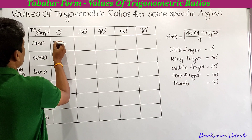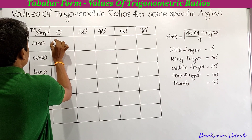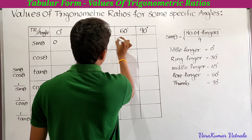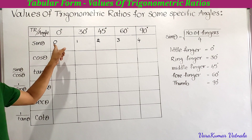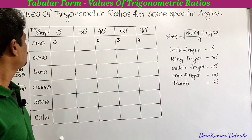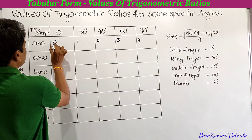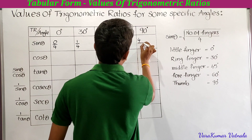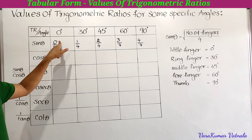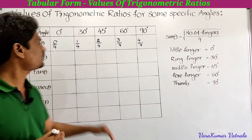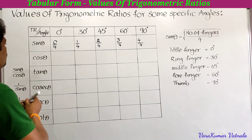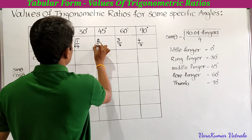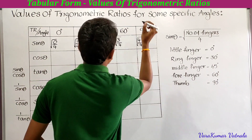First, write 0, 1, 2, 3, 4 starting from 0. Next, in the second step, divide each value by 4: 0 by 4, 1 by 4, 2 by 4, 3 by 4, 4 by 4. Then take the square root of each: square root of 0/4, square root of 1/4, square root of 2/4, square root of 3/4, square root of 4/4.